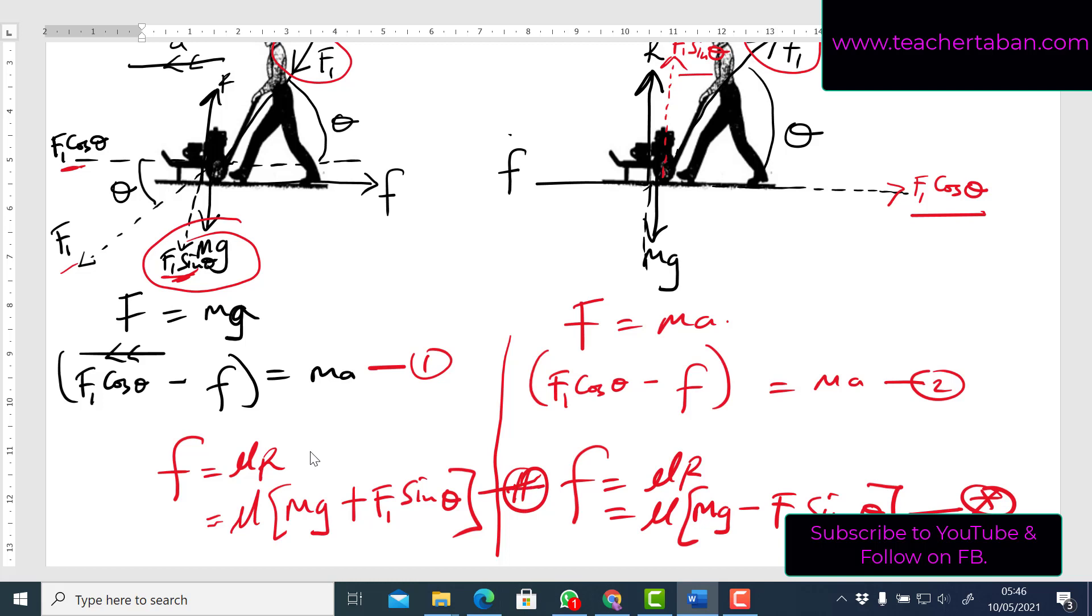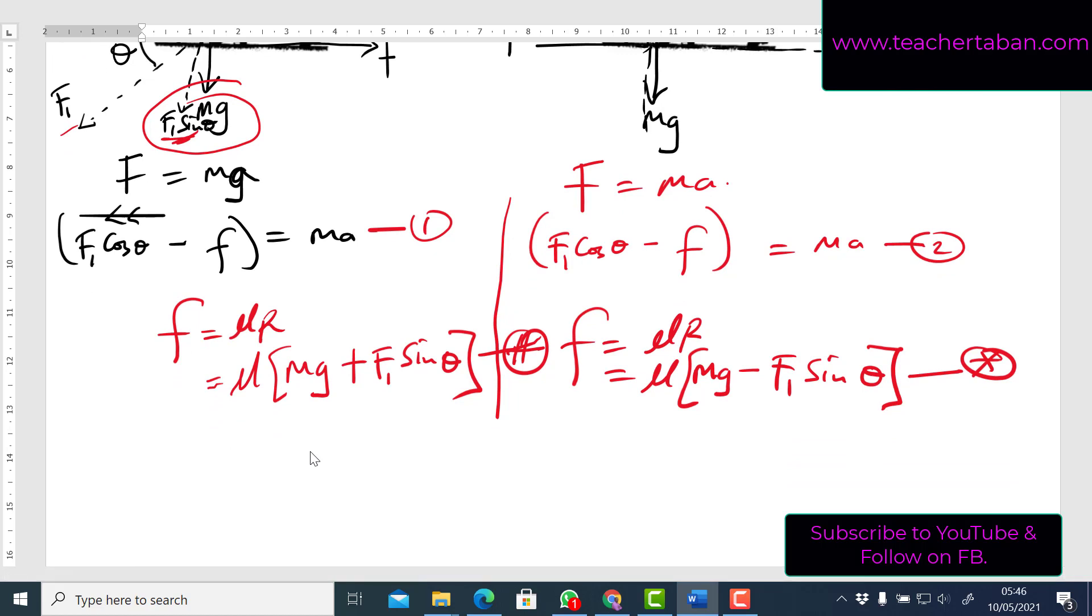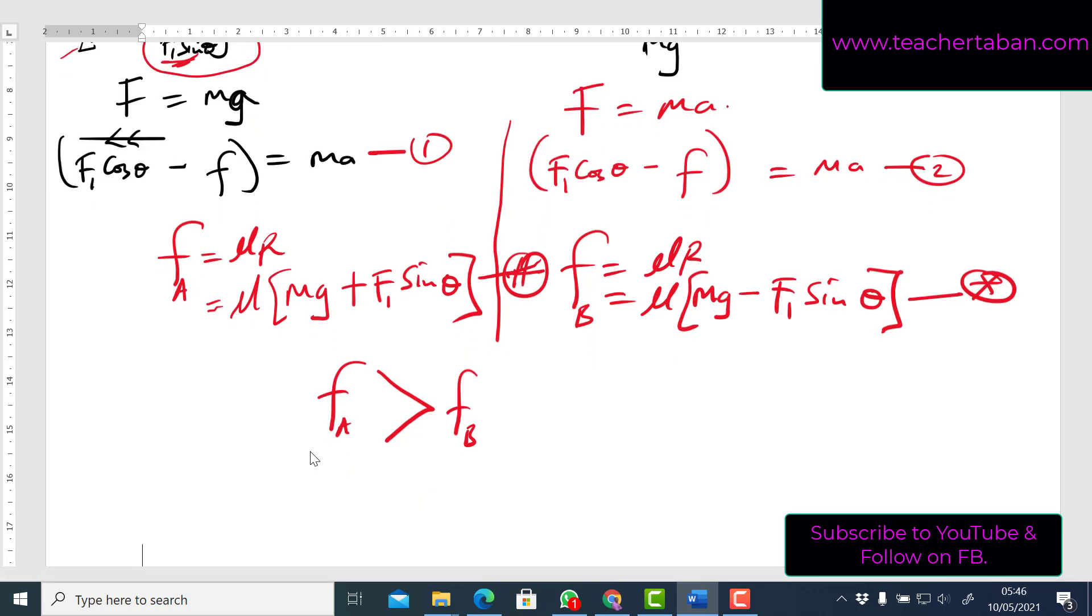Which therefore means that if I call this one my frictional force FA, and then this one FB, it can clearly be seen that my FA is bigger than the FB. In other words, the frictional force when I'm pushing is greater than the frictional force when I'm pulling the body. And therefore, I can simply summarize and say that it is easier to pull the lawnmower than pushing it, simply basing on these two expressions here.